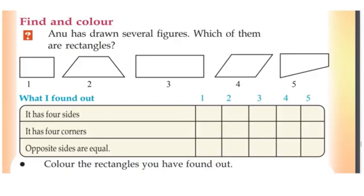Last one — find and colour. Anu has drawn several figures. Which of them are rectangles? So Anu's figures: which pictures are rectangles? What rectangles are on the other side — how we look for them. It has four sides. Yes, there are four corners. Opposite sides are equal. This is a rectangle.